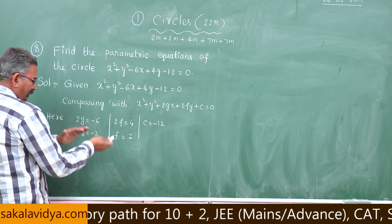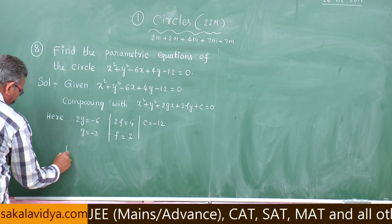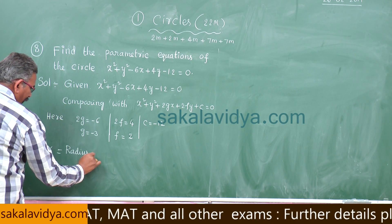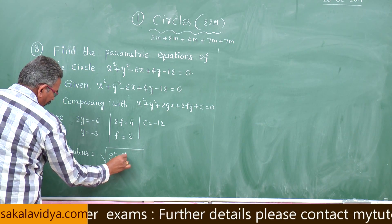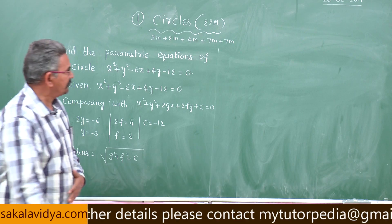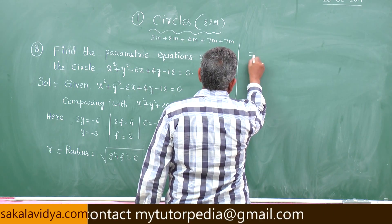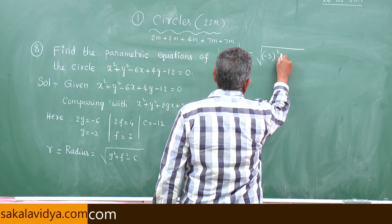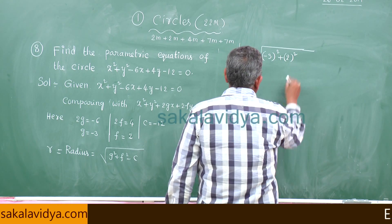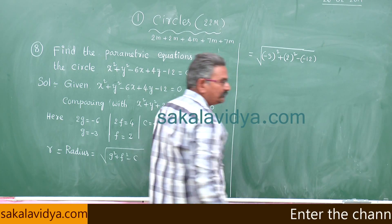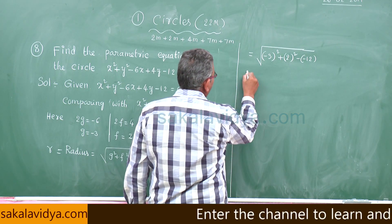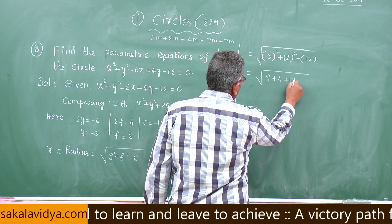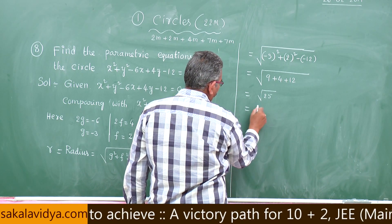Now let us find the radius. Radius r equals the square root of g squared plus f squared minus c. Substituting: square root of (minus 3) squared plus 2 squared minus (minus 12) equals square root of 9 plus 4 plus 12 equals square root of 25 equals 5 units.